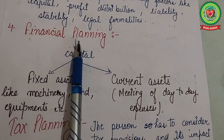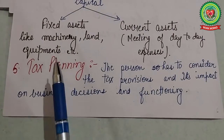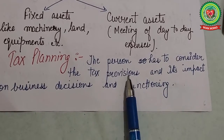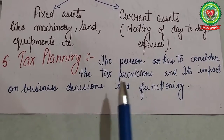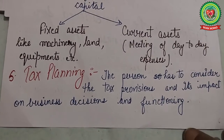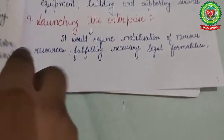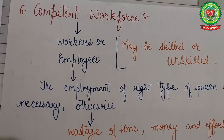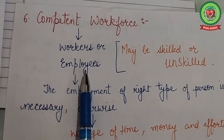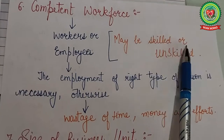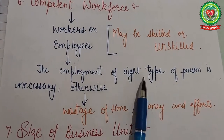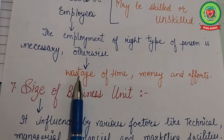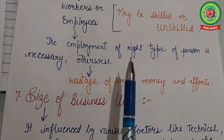The next factor is tax planning. Before starting a business, the businessman should consider in advance the tax liability, tax provisions, and their impact on business decisions and functioning. The next factor is competent workforce. Workers or employees may be skilled or unskilled, and employment of the right type of person is necessary, otherwise it results in huge wastage of time, money, and effort.